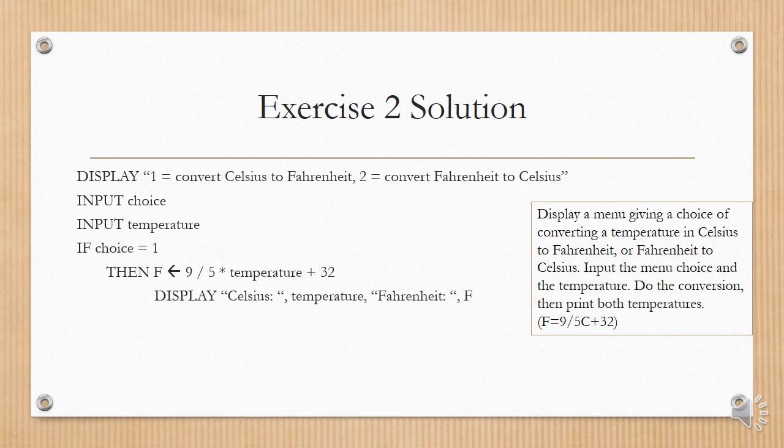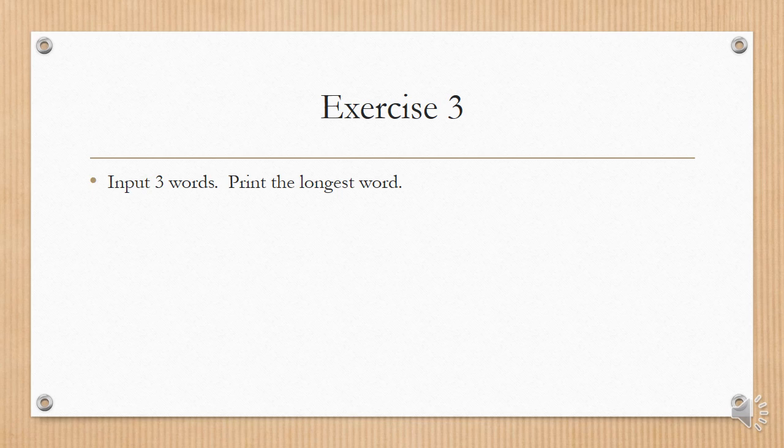And then we display the result. Celsius, temperature, Fahrenheit, F. Else, this is if the person chose 2. Then C, the Celsius temperature, gets set to the temperature, minus 32 times 5 divided by 9. And we display Fahrenheit, temperature, Celsius, C. And we end the IF, and that's the end of the exercise.